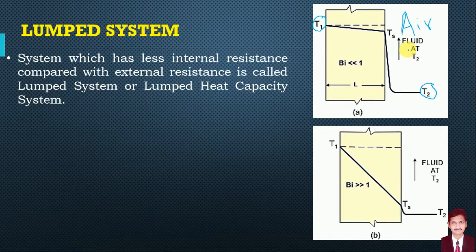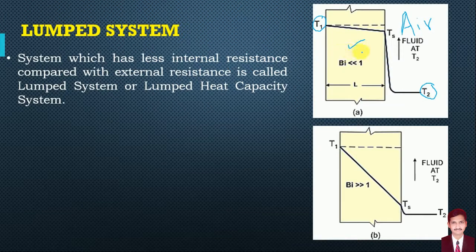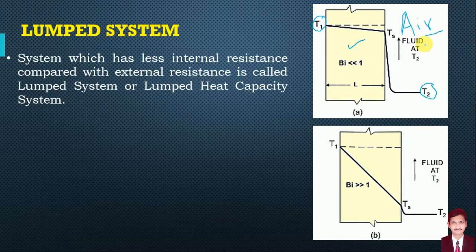For a lumped system, the resistance provided by the internal material — that is, resistance provided by the wall — and the external resistance means resistance provided by the air. So if the resistance provided by this internal material is very less compared to the resistance provided by air, then that particular system is called a lumped system.